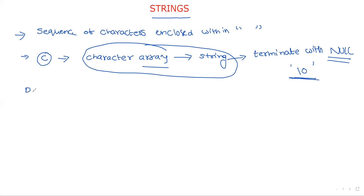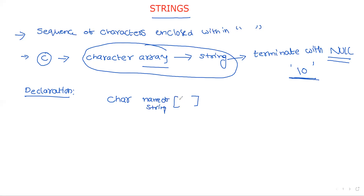Now, what is a declaration? The very simple declaration: the data type is char, followed by the name of the string, and within square brackets we give the size — that is, the number of characters present in the string. And then we have initialization.